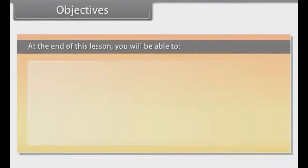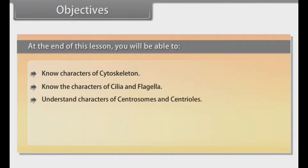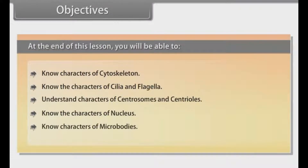Objectives: At the end of this lesson, you will be able to know the characters of cytoskeleton, know the characters of cilia and flagella, understand the characters of centrosomes and centrioles, know the characters of nucleus, and know the characters of microbodies.